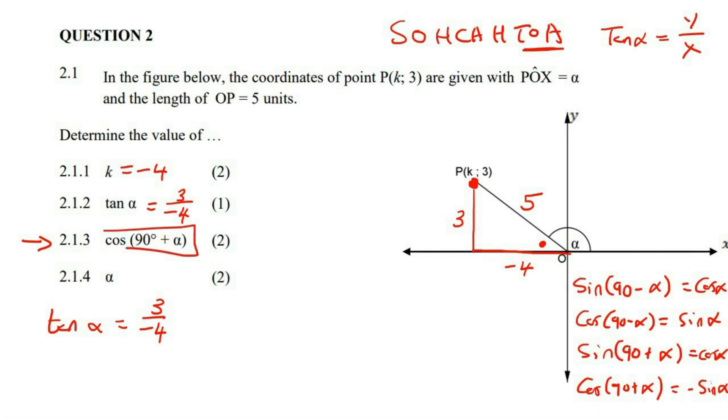So we can say that cos of 90 plus alpha is the same as negative sin alpha. Then we can just work out what sin alpha is, because that's this triangle. Remember, sin is opposite over hypotenuse, or some learners prefer to use y over r method. So whatever you choose, it's going to end up being negative. Sin is 3 over 5. So the answer is negative 3 over 5.